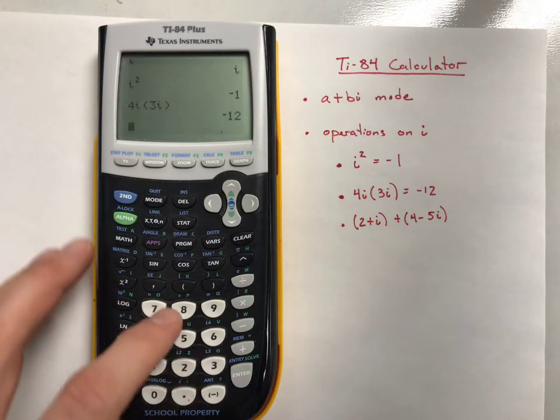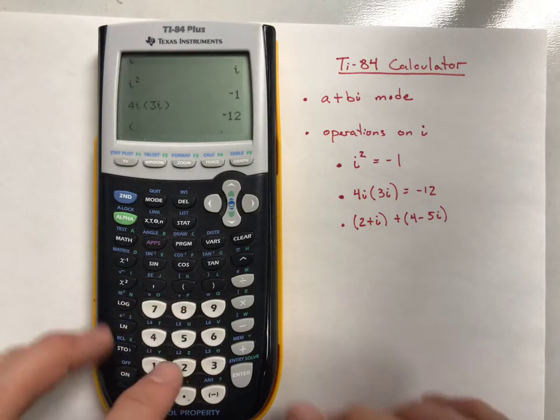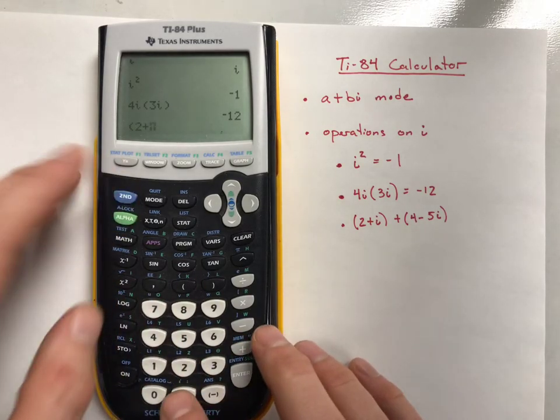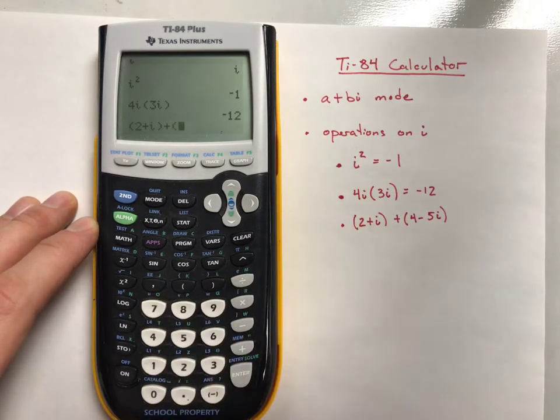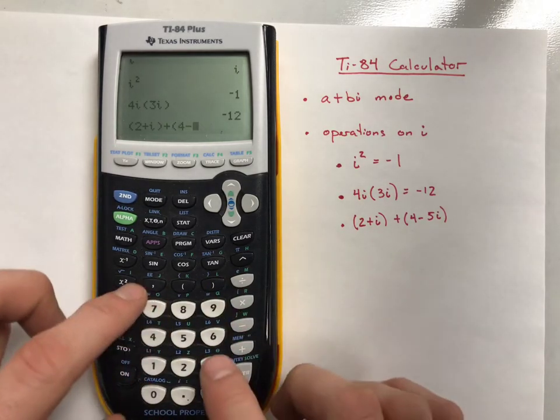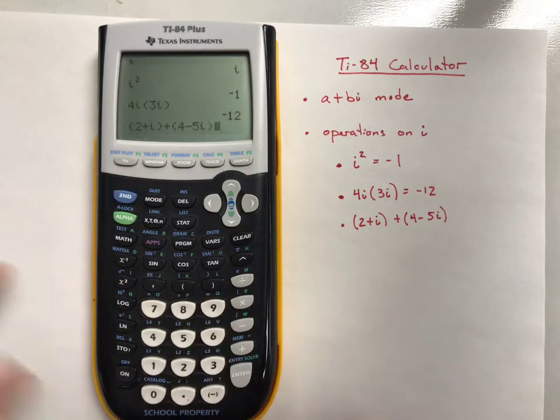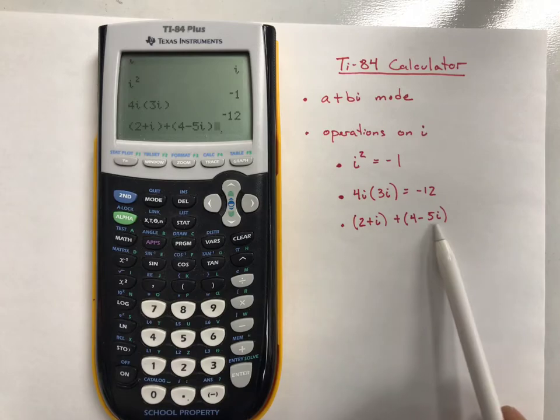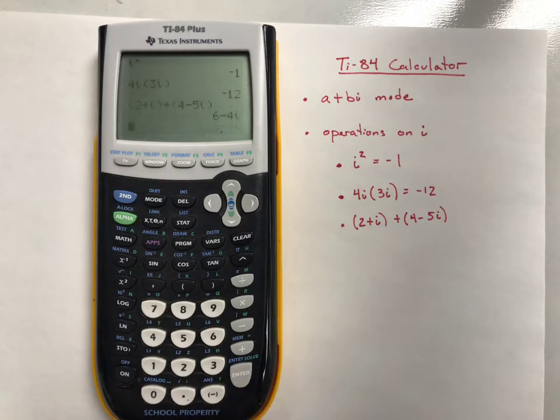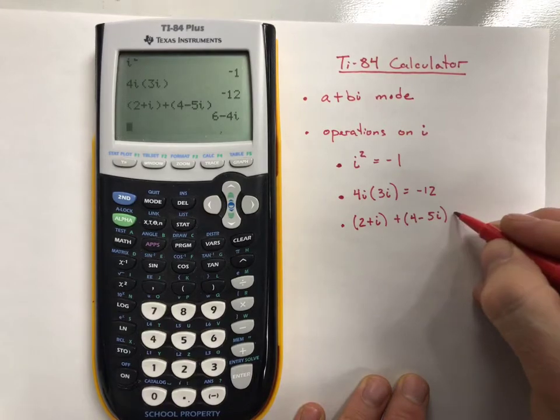You can also do addition and subtraction. A complex number is in A plus BI form. So 2 plus I in parentheses, then 4 minus 5I in parentheses. I don't think those parentheses are necessary, but that's the way the original problem is written. When you hit enter, you get 6 minus 4I.